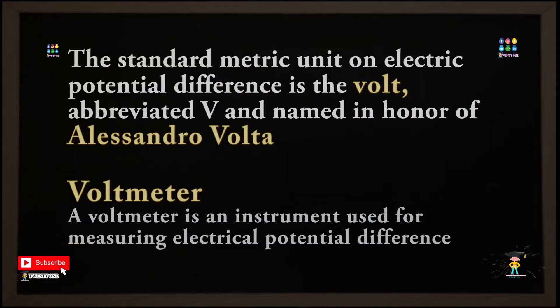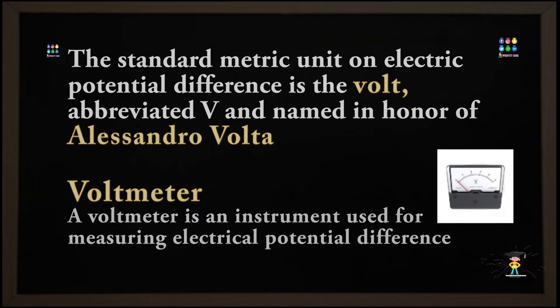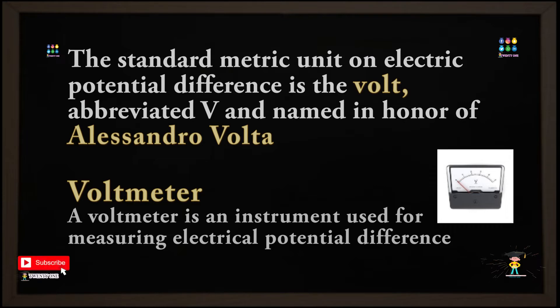This voltage is a unit — voltage is the potential difference. The unit of potential difference is the Volt. The device used to measure it is the Voltmeter. Unit: Ampere for current, unit: Volt for potential difference, device: Voltmeter.